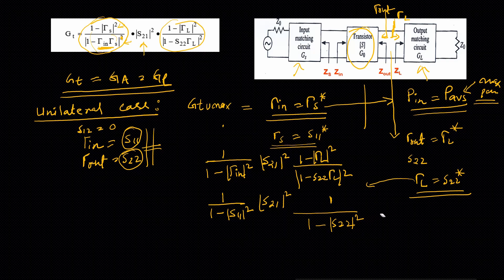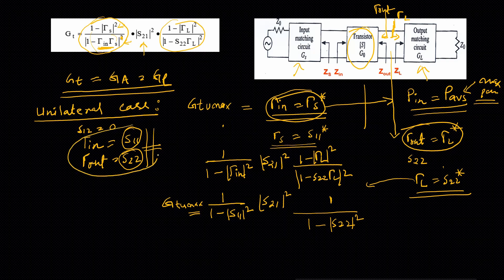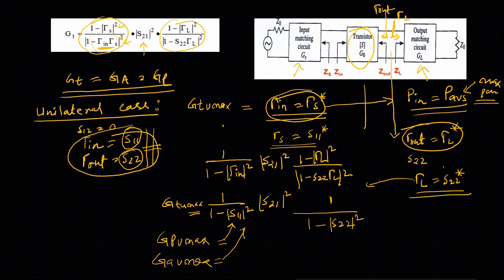So this gives us GTU_max. Now if you do the same thing for G_P and G_A in the unilateral case, following the same procedure, GPU_max and GAU_max will have the same equation. Therefore, for maximum gain in the unilateral case: GTU_max equals GPU_max equals GAU_max. This is a very short video because it is just an extension of Lecture 2. In Lecture 3 we will start with the constant gain circle derivation. Thank you, bye.